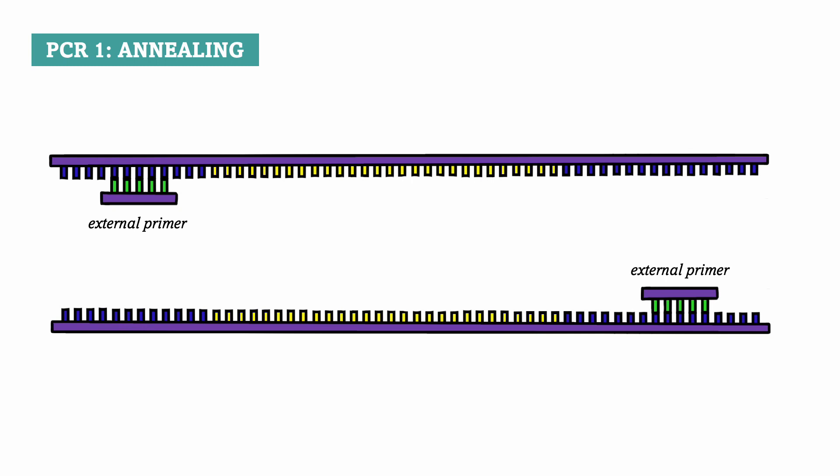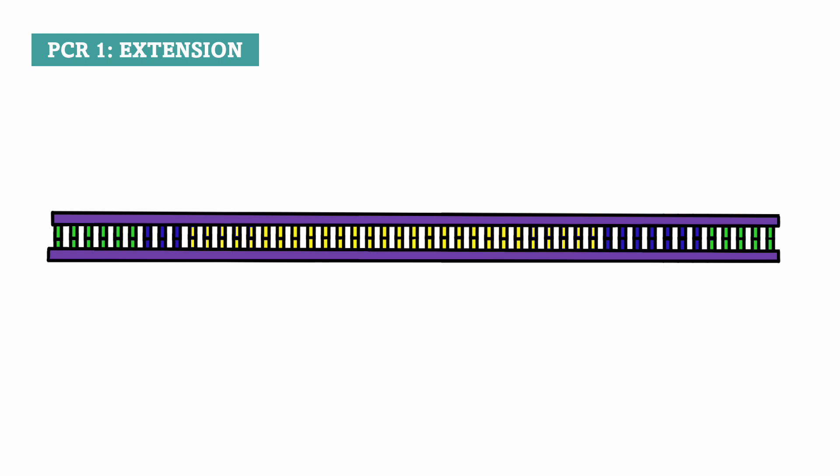External primers are primers that are designed to be complementary to a sequence that is outside the DNA sequence we want to amplify. Of course it is still very close to it and includes the sequence of our interest. By doing so we get a slightly larger product in extension, when DNA polymerase synthesizes the two DNA strands.